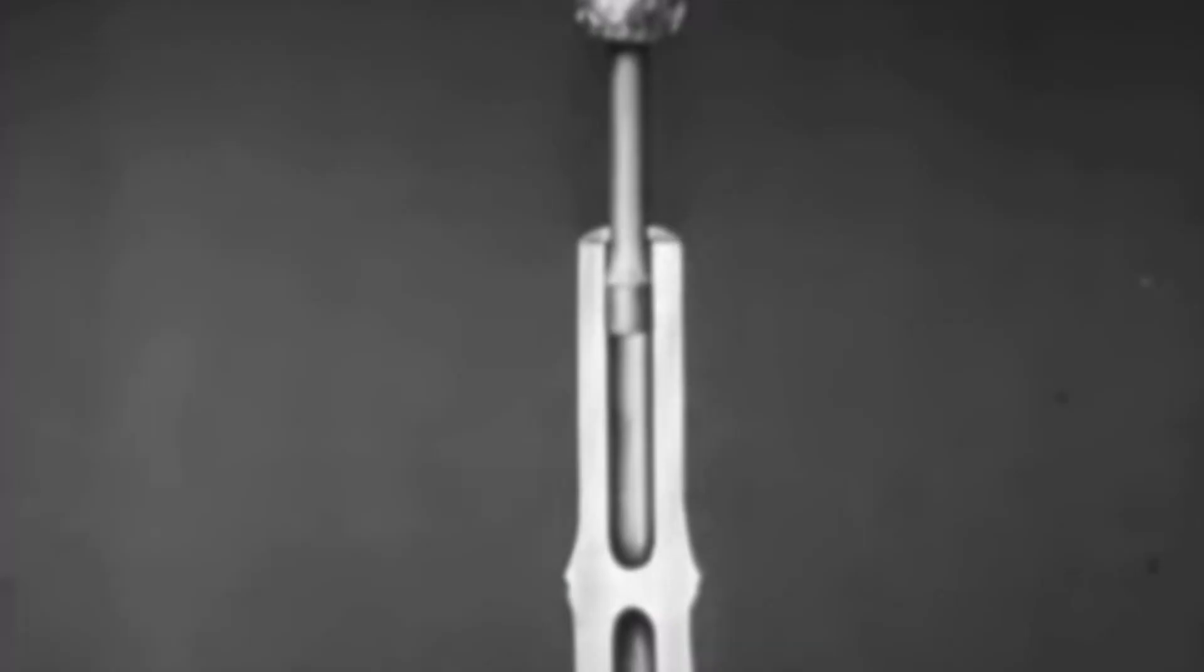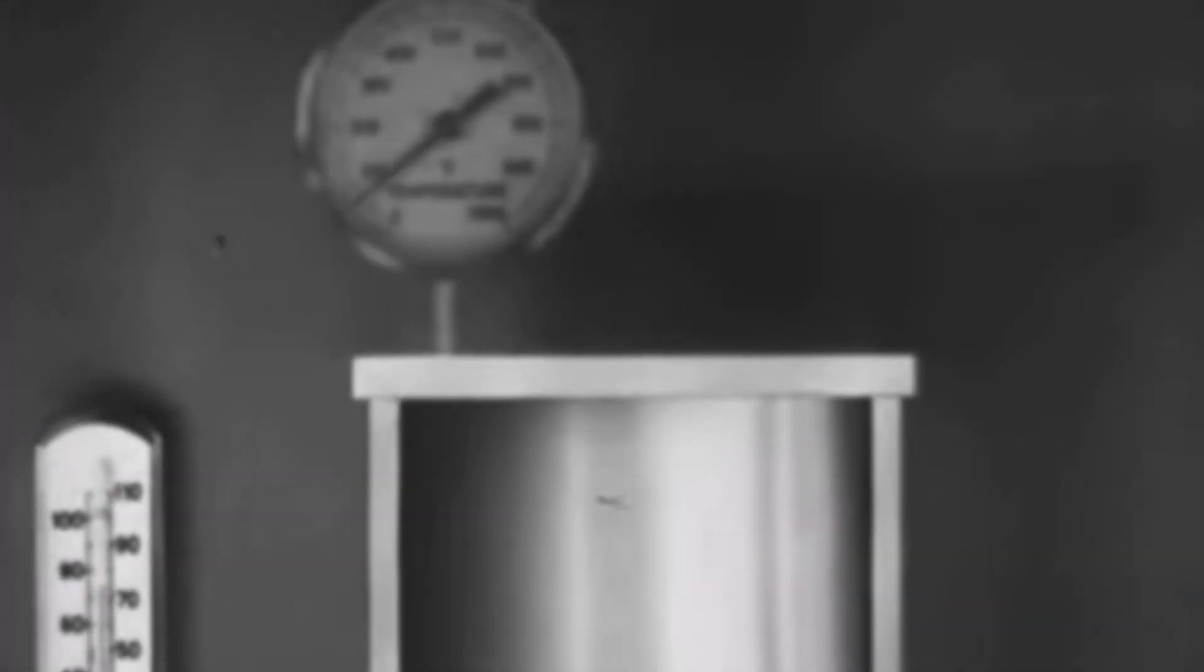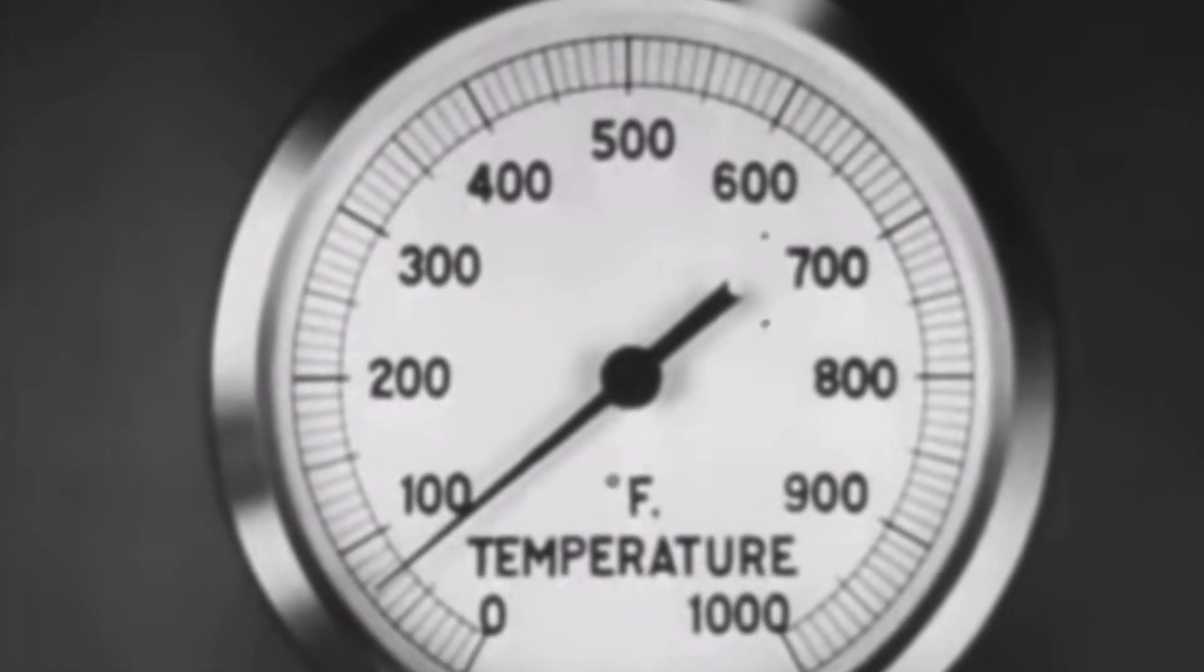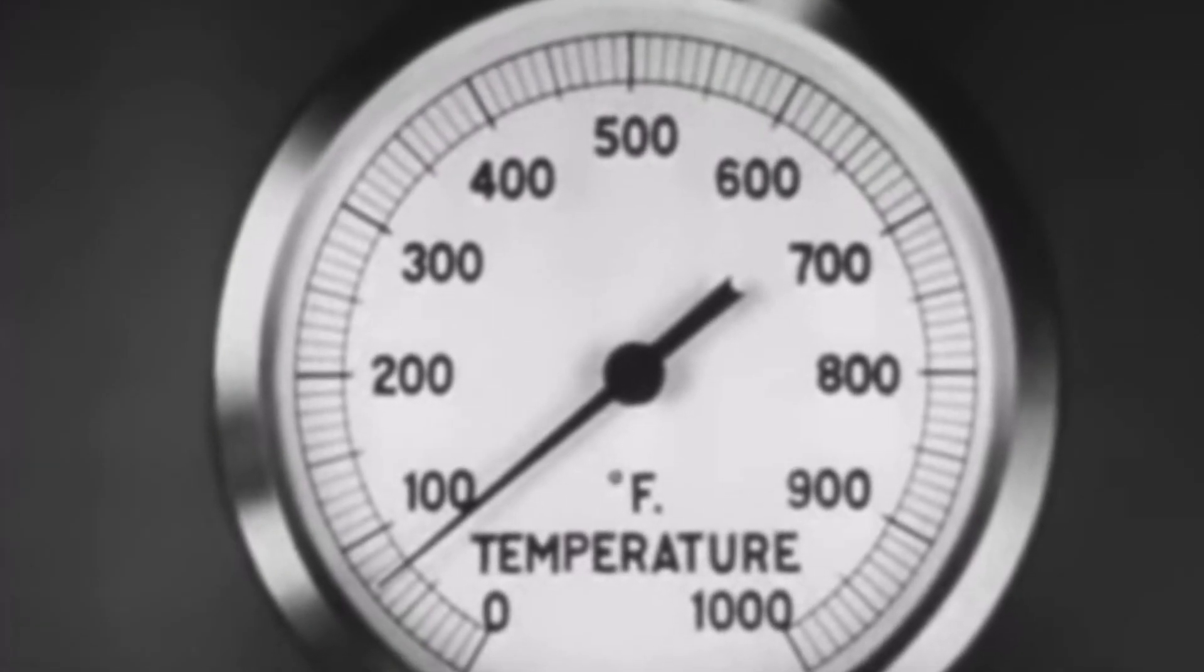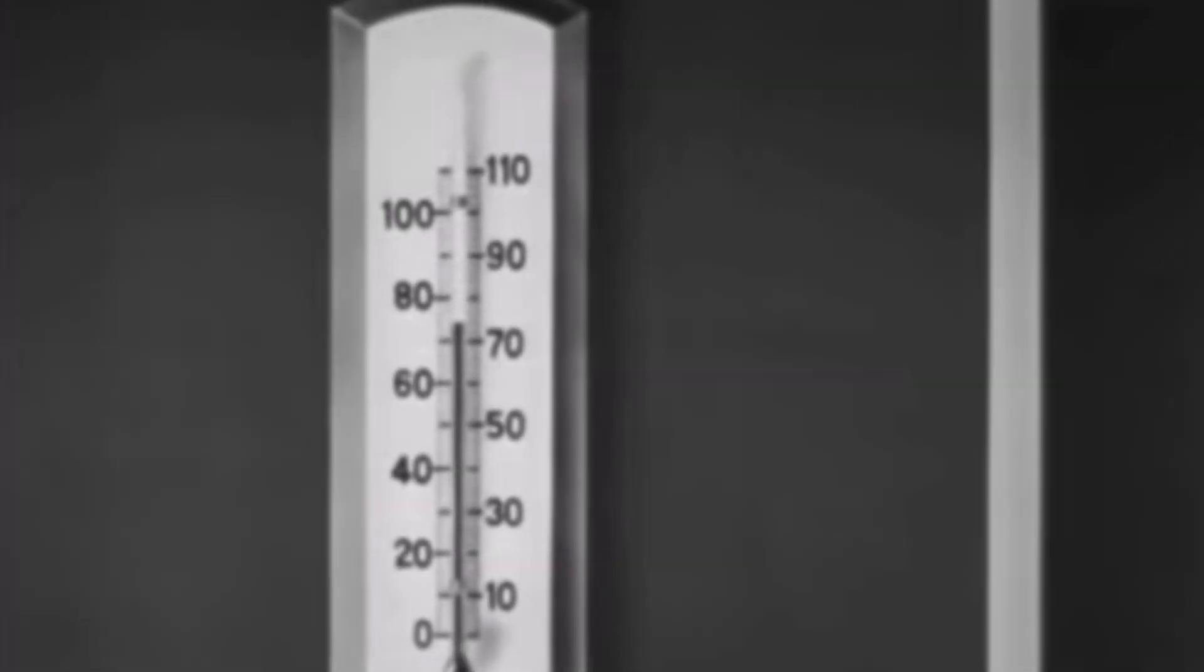To understand how this happens, let's construct a modern fire syringe. First, we turn the apparatus upside down. Then we put two thermometers in convenient places. One of these thermometers will record the temperature of the air inside the cylinder, and the other registers the room temperature.